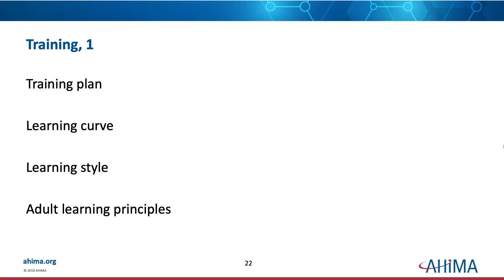You definitely need a training plan and you need to think about the learning curve — how long it's going to take for each type of learner to master training. Is it a matter of hours, days, or weeks? Your training plan needs to address all the learning styles — at least visual, auditory, and kinesthetic. It needs to be set up for adult learning principles. Adults learn differently than children; we tend to be a lot more independent and don't want to sit like a child at a desk in school.